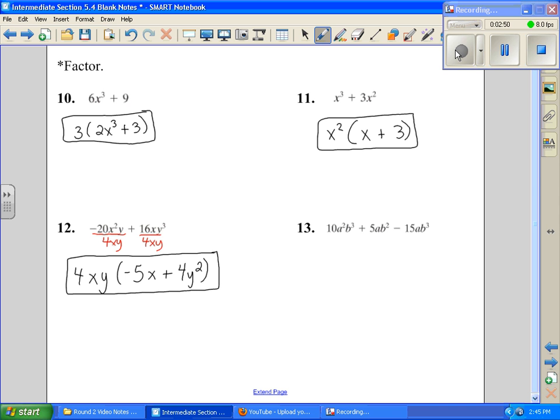And then on number 13, let's see, we can take out a 5. We can also take out at least one a in each of those terms. And there's at least, let's see, there's 3 b's, 2 b's, 3, there's at least 2 b's in each of them.